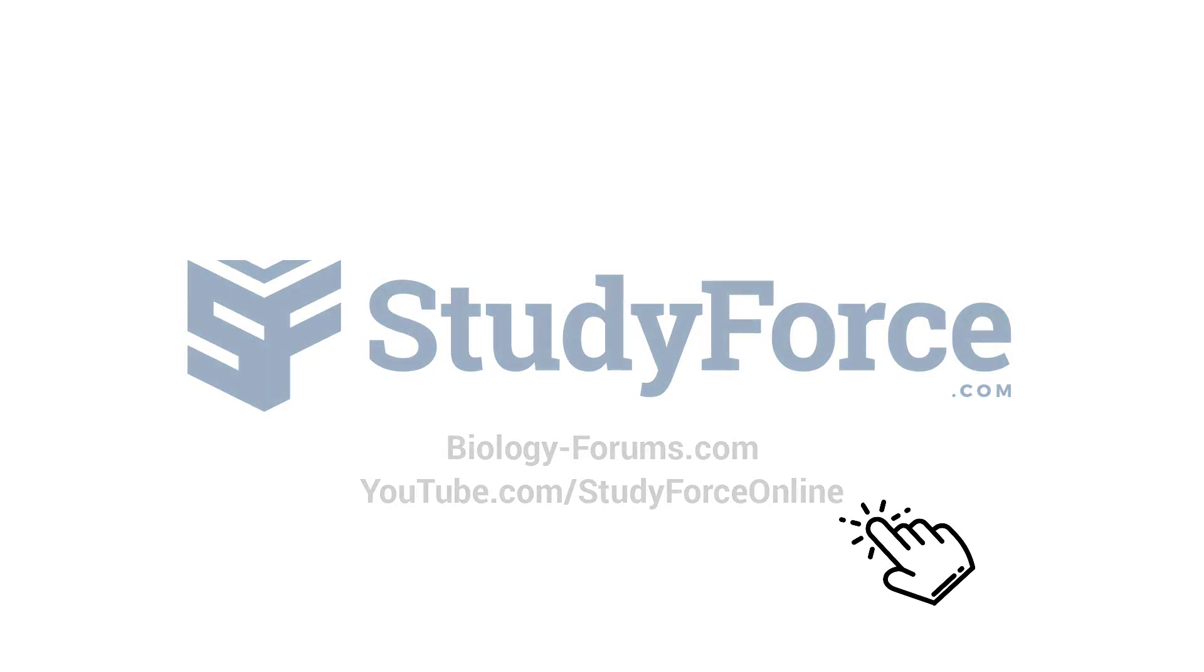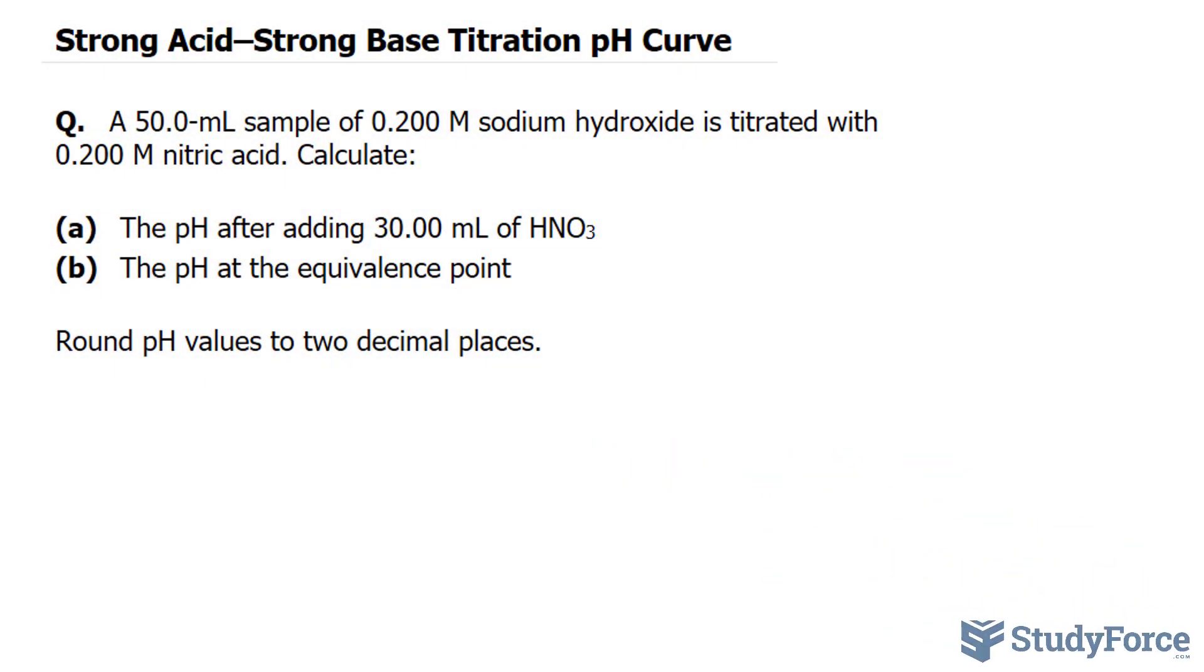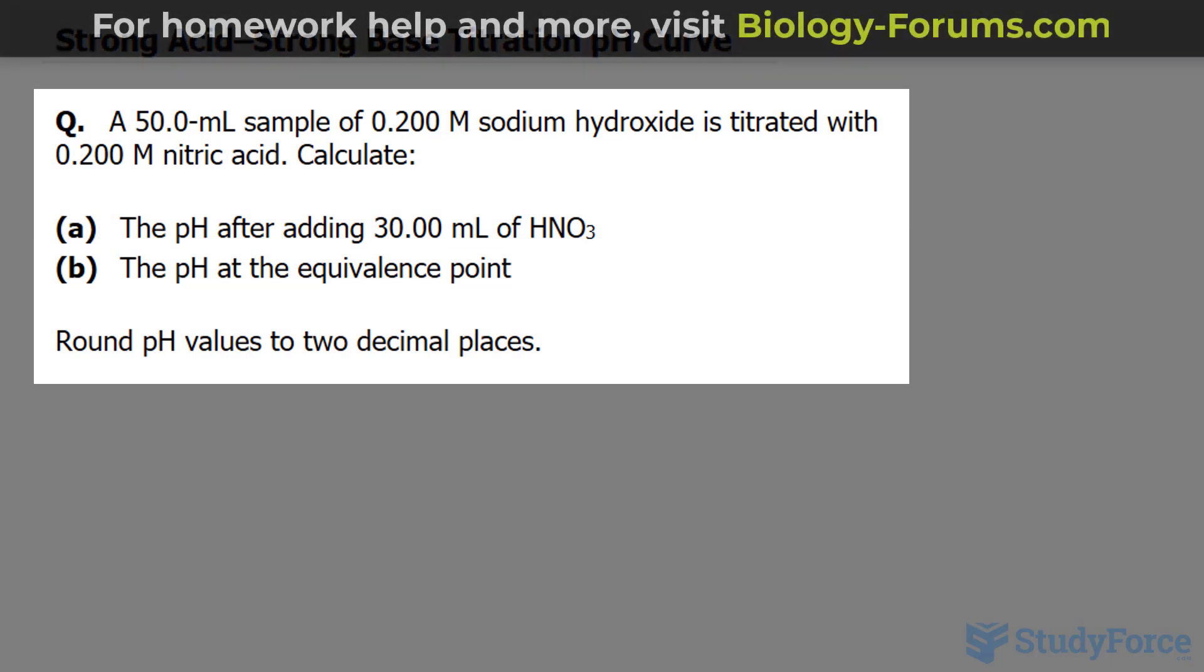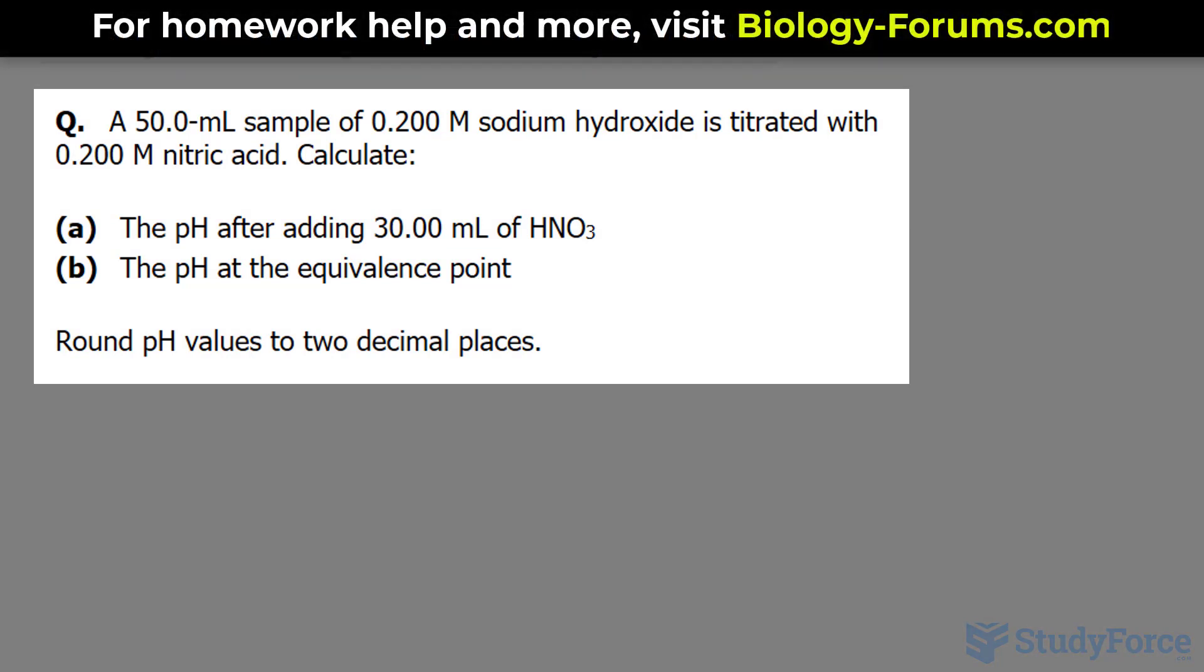In this lesson, we'll be discussing titration using strong acids and strong bases. The question reads: a 50.0 milliliter sample of 0.200 molar sodium hydroxide is titrated with 0.200 molar nitric acid.